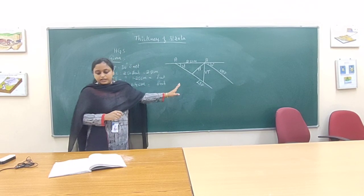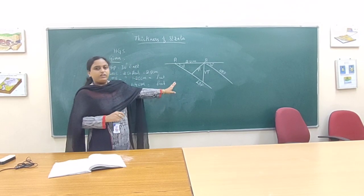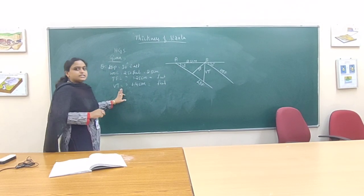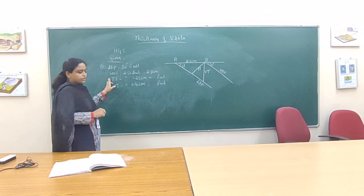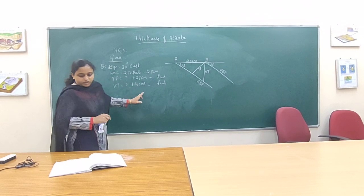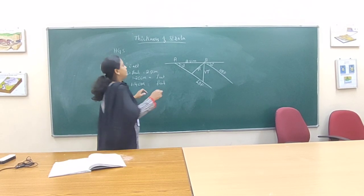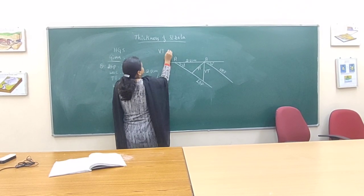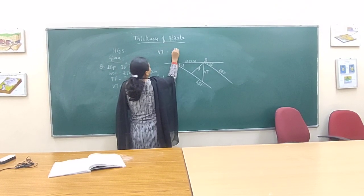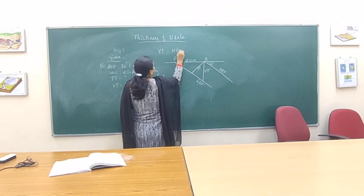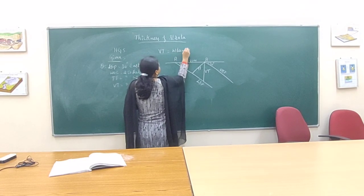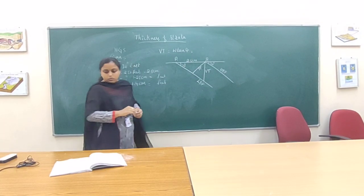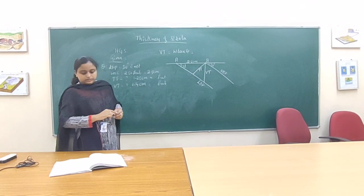After that, a mathematical formula will be there for vertical thickness as well as true thickness. For vertical thickness, the formula is: vertical thickness = W·tan(θ).